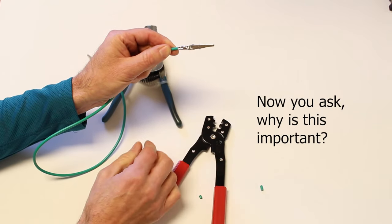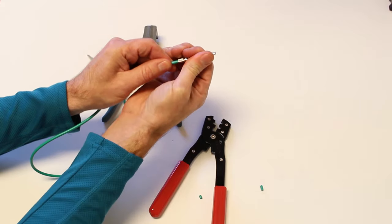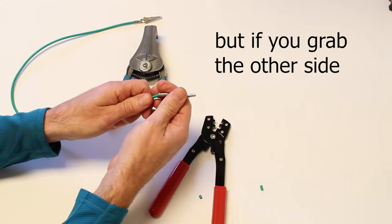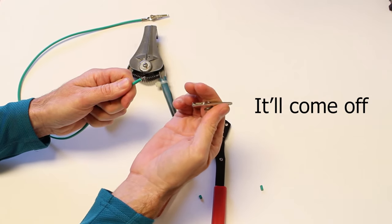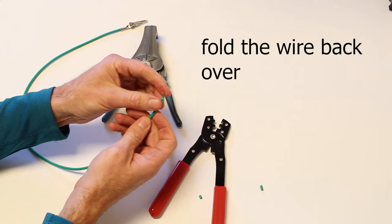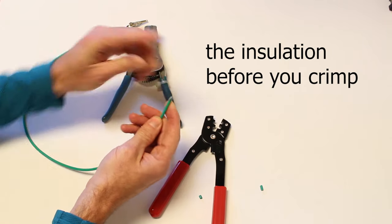And now you ask, why is this important? You can't pull this off, but if you grab the other side and you give a little tug, it'll come off. So that's why you want to fold the wire back over the insulation before you crimp.